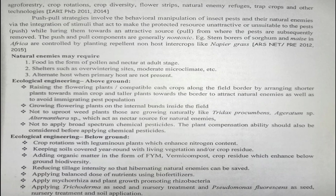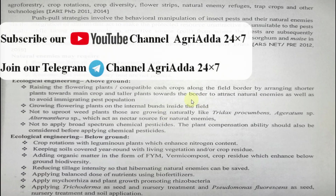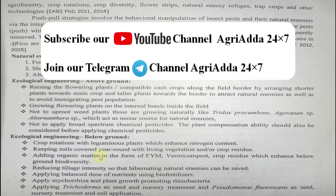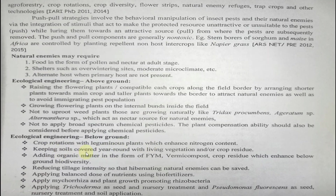Broad-spectrum chemical pesticides should not be applied as they kill all insects including natural enemies, pests, and honeybees. For below-ground management: crop rotation, keeping the soil covered year-round with living vegetation, adding organic matter like vermicompost, reducing tillage intensity, applying a balanced dose of nutrients with less nitrogen and more potassium, and applying mycorrhiza and plant-growth-promoting rhizobacteria. Also apply Trichoderma as seed and nursery treatment, and Pseudomonas for disease management.